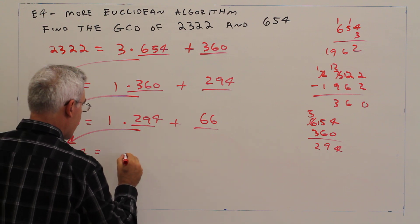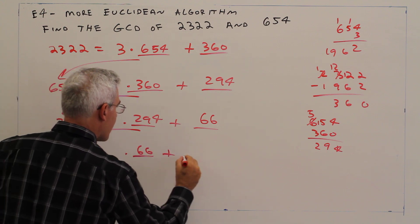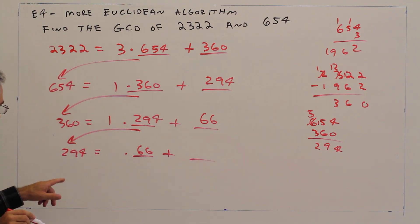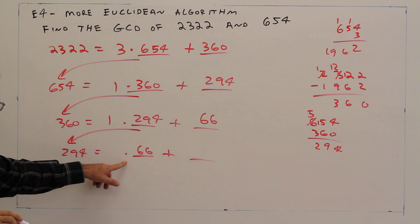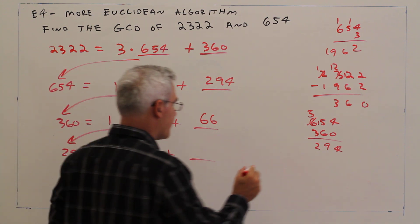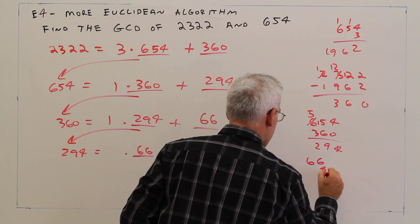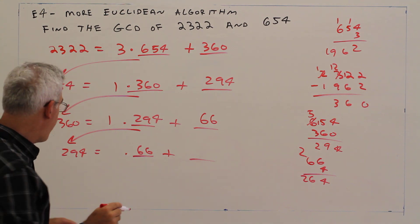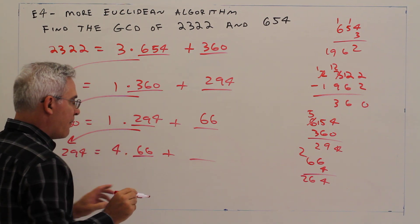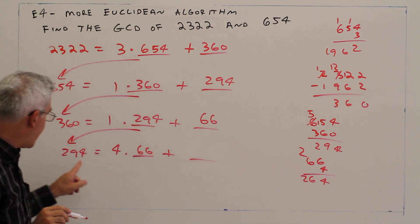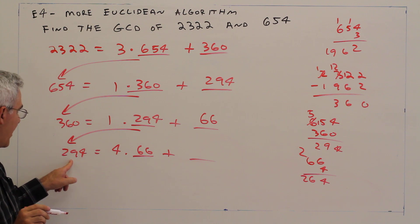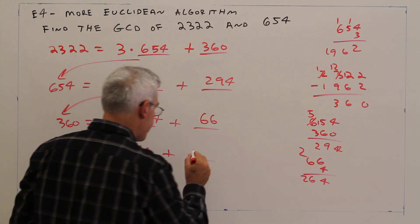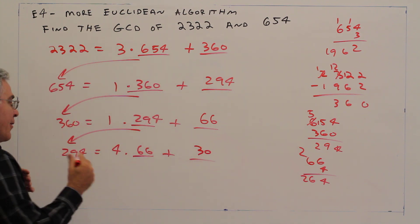294 equals how many 66s? Let's see here. We can try four. Okay, four. Find the remainder 264, 294. That's going to be a 30. Carry those over.